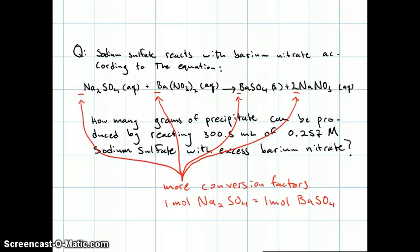The coefficients from the balanced chemical equation can also be used as conversion factors. Note that when no coefficient is written, it's understood to be 1. In this case, the relevant conversion factor is 1 mole of sodium sulfate equals 1 mole of barium sulfate.